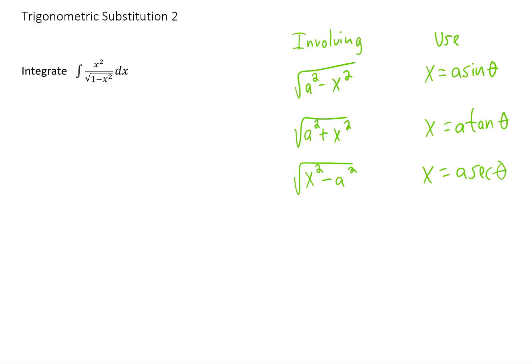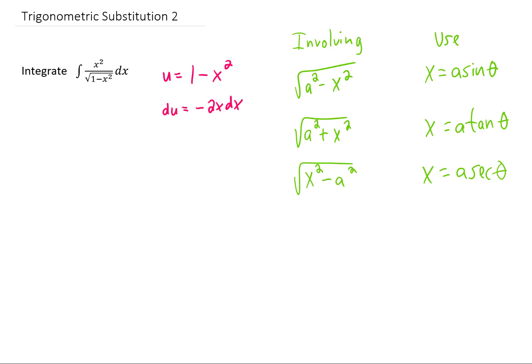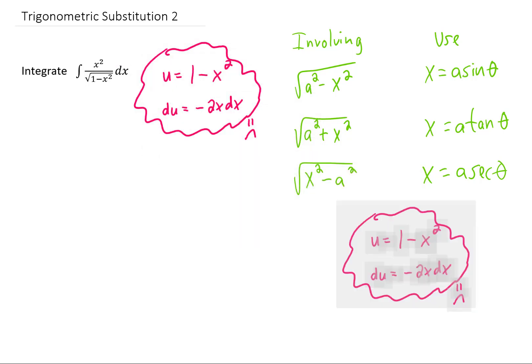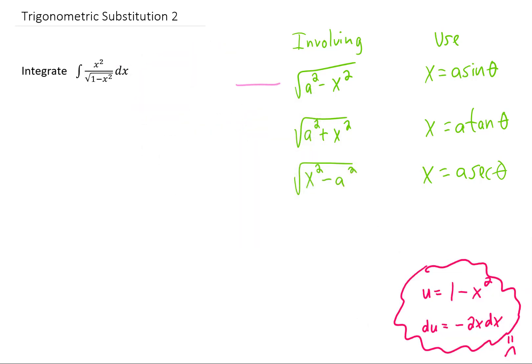We have another integral to complete, and the square root of 1 minus x squared in this integral suggests we are going to use a trigonometric substitution. Although it is typically a good idea to make sure a simple u-substitution isn't going to work first. If we make u equal 1 minus x squared, we get du equals negative 2x dx. If there was just an x instead of x squared in the numerator, this u-substitution would work, but unfortunately it does not. So we can move on with our trig substitution.